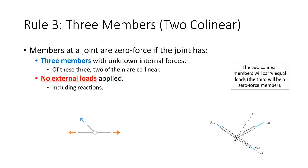Rule three: if you have a joint with three unknowns, two of those members are collinear, and the third is off to the side, and there are no loads applied, the two collinear members are equal and the one hanging off to the side is a zero force member.